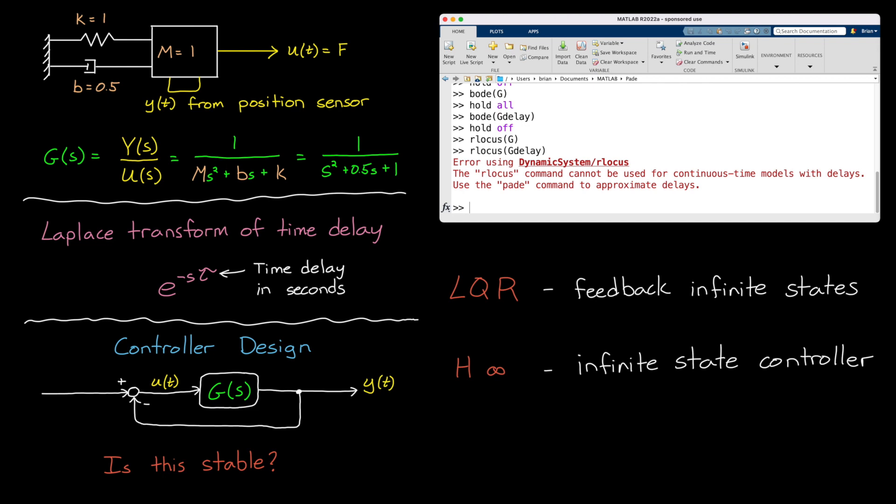So like the MATLAB error says, this is where Padé approximation comes in. We can replace the exact function e to the minus s tau with an approximation in the form of a rational polynomial. Or since the variable is the Laplace variable s, then this turns out to just be a rational transfer function. Essentially, we're capturing the essential dynamics of the time delay in a continuous time transfer function that now has a finite number of states.